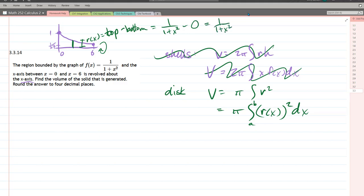Okay. So we have pi integral. We're going 0 to 6. That was already given to us. 1 over 1 plus x squared raised to second power dx. Okay.